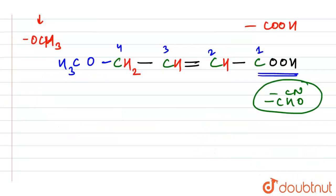So now let's write it properly. Here we have OCH₃, CH₂, CH. Here we have CH double bond CH. Here we have COOH. This is our required structure.